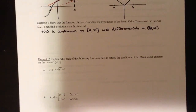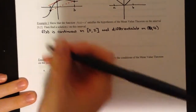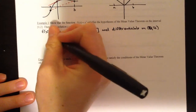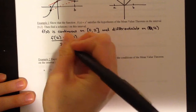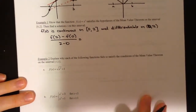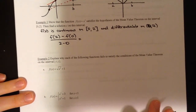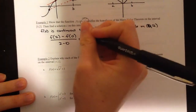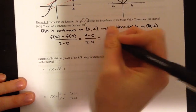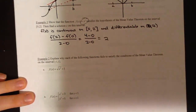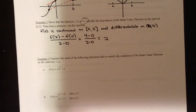The mean value theorem guarantees a point where the secant slope is the same as the tangent slope. We start by finding the secant slope: f(2) minus f(0), all over 2 minus 0. Plugging in: 2 squared is 4, minus 0 squared is 0, over 2 minus 0. That gives 4 over 2, which is 2. So the average rate of change is 2.